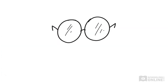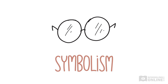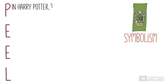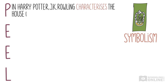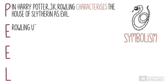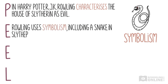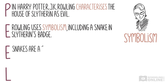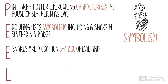Let's take a look at symbolism next. Remember how snakes were used as a symbol of evil in Harry Potter? In Harry Potter, JK Rowling characterises the house of Slytherin as evil. Rowling uses symbolism, including a snake in Slytherin's badge.